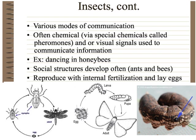Insects have modes of communication including pheromones, which are chemical signals. You'll also see dancing in honeybees, which we'll get to later. Some develop social structures, like ants, termites, and bees that live in colonies. They have internal fertilization and lay eggs.